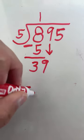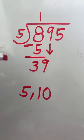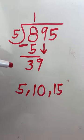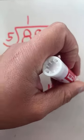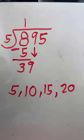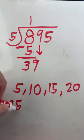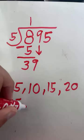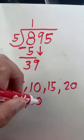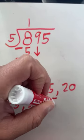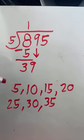5, that's one group. 10, two groups of 5. 15, three groups of 5. 20, four groups of 5. 25, five groups of 5. 30, six groups of 5. 35, seven groups of 5. Now if we count by 5 again, we would be at 40.